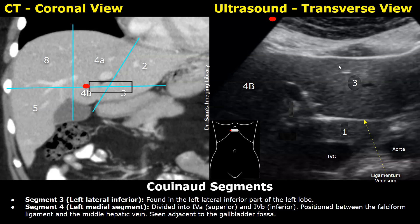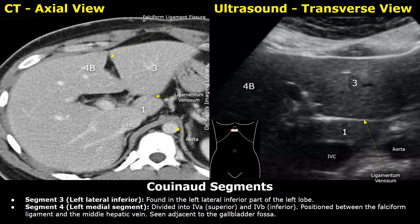This upper part of the liver is segment 3. The probe is placed so we can see segment 3 anteriorly and segment 4. Laterally it is segment 4b. You can also see the portal vein here. In this axial or transverse image you can also see the falciform ligament fissure. This image shows the lower aspect of the left lobe, which is segment 3. Adjacent to segment 3 will be segment 4b on the other side of the falciform ligament — so segment 4b and 3 are next to each other. Posteriorly, you will see the ligamentum venosum fissure in the CT image.